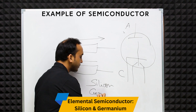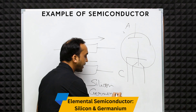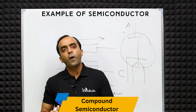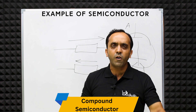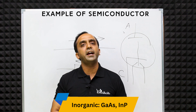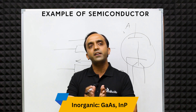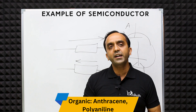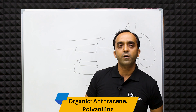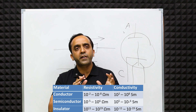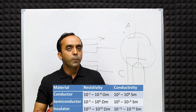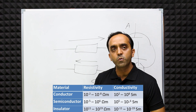What are the examples of semiconductors? In elemental form, we have silicon and germanium — these are two elemental semiconductors. In compound form, there are inorganic semiconductors such as gallium arsenide and indium phosphide. And in organic form, we have anthracene and polyaniline as organic semiconductors.